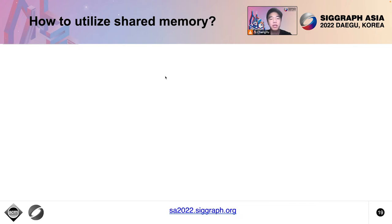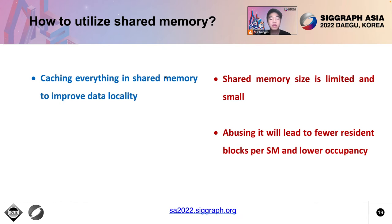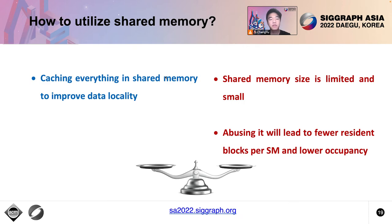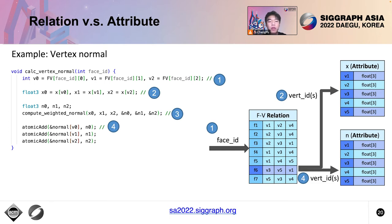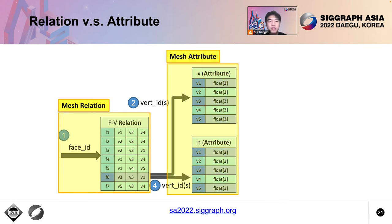How to utilize shared memory is another crucial question. On one hand, we want to cache everything in shared memory to improve data locality. On the other hand, shared memory size is limited. Since total shared memory resource is limited per streaming multiprocessor on GPU, large shared memory size per block will lead to fewer resident blocks per streaming multiprocessor, lower occupancy, and hurt overall performance. In the surface normal example, we can see two fundamentally different data types: the mesh relation, which includes a face-vertex relation, and mesh attributes, which include position and normal arrays. These can be cached in shared memory orthogonally, giving us four different localization strategies.